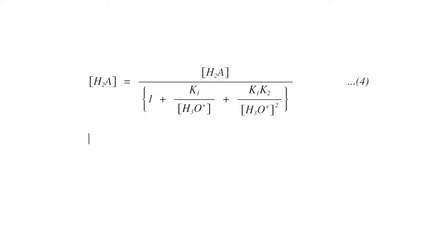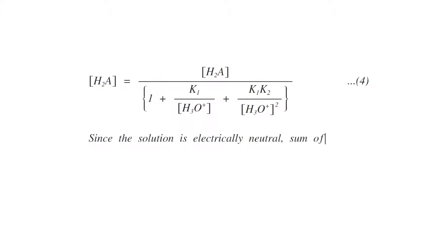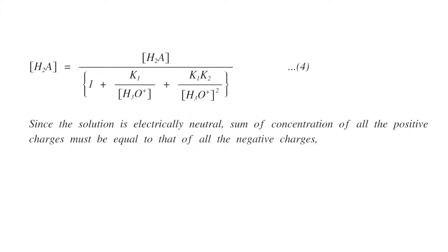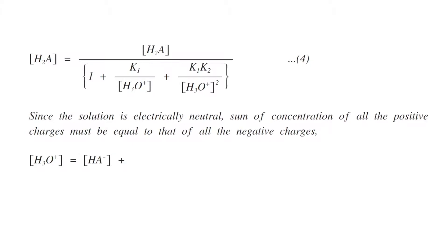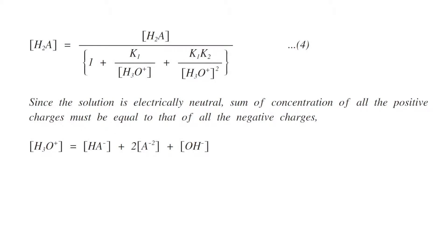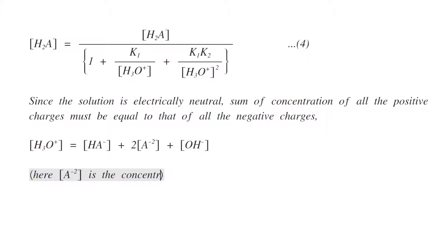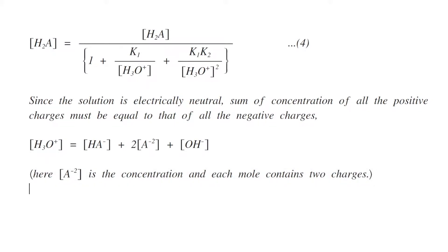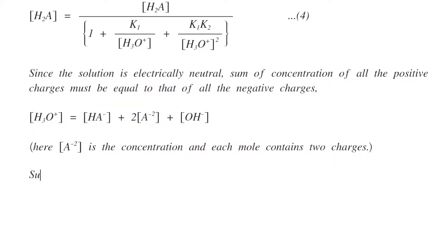Since the solution is electrically neutral, the sum of concentrations of all positive charges must equal all negative charges. So [H3O⁺] equals [HA⁻] + 2[A²⁻] + [OH⁻]. The factor of 2 is included because each mole of A²⁻ carries two negative charges.